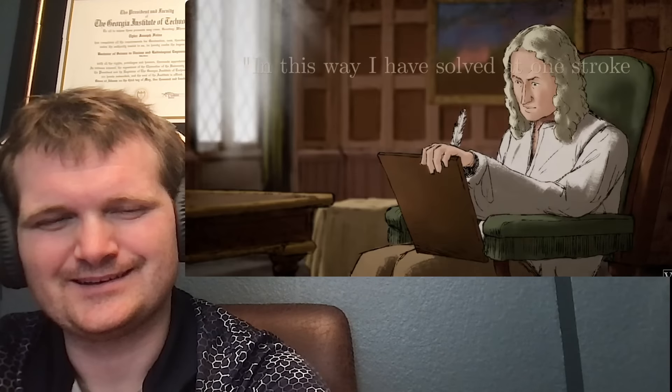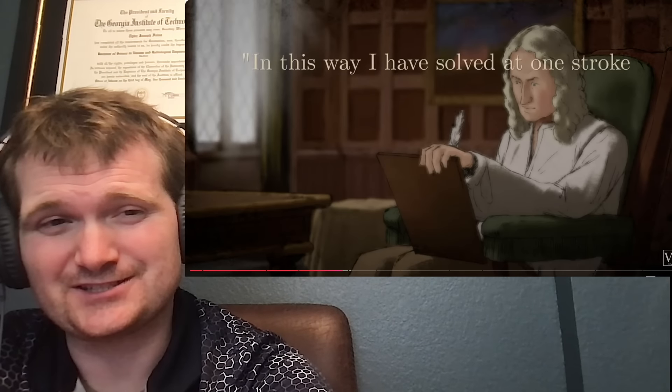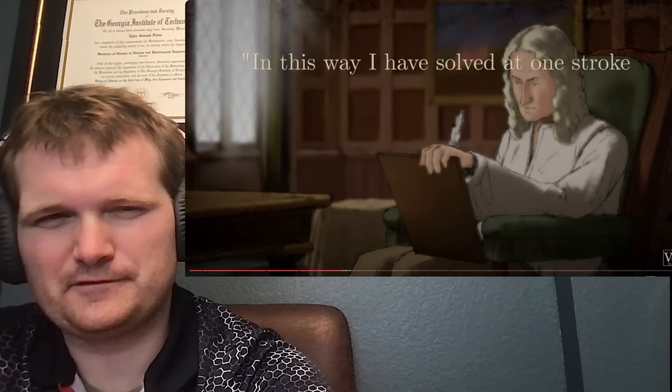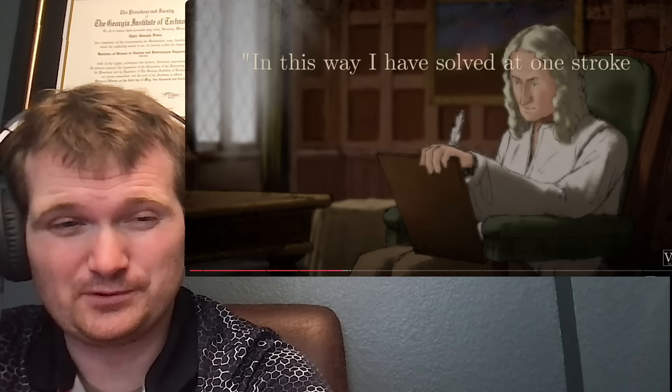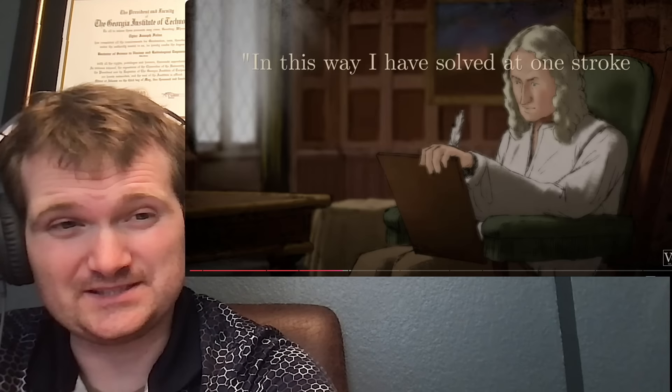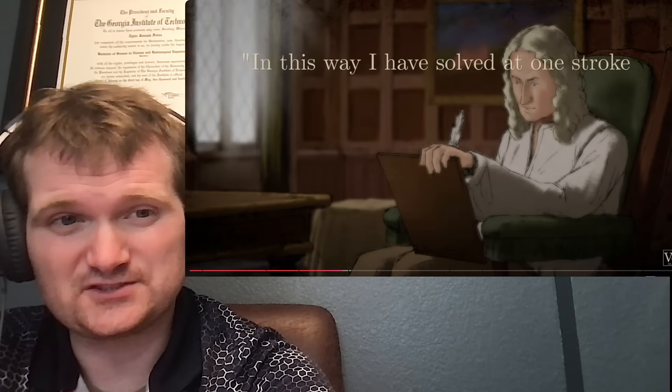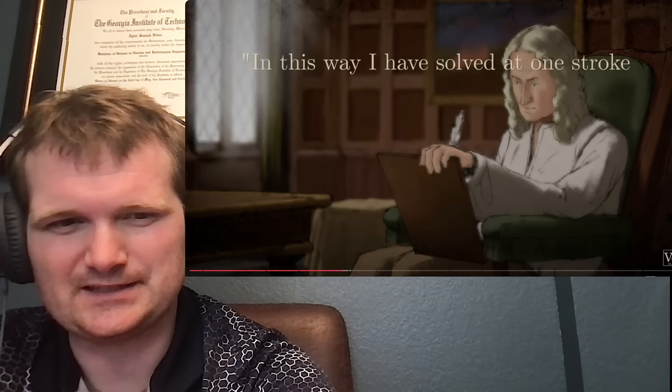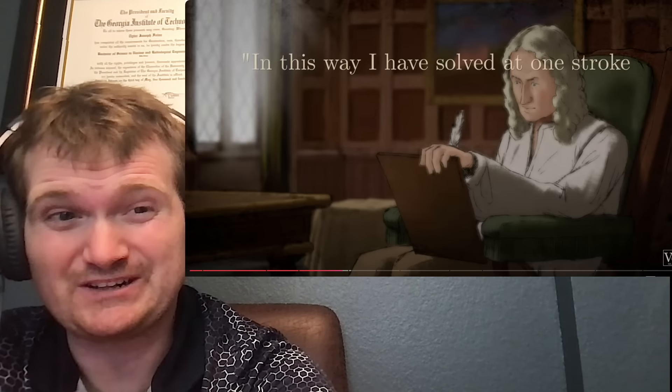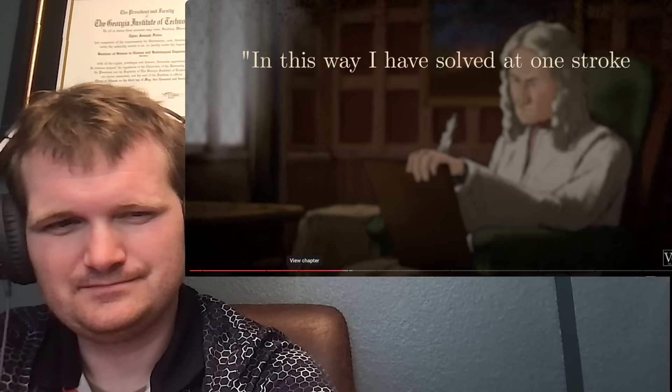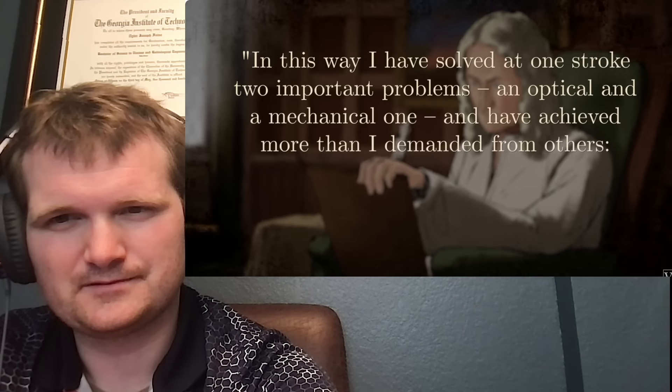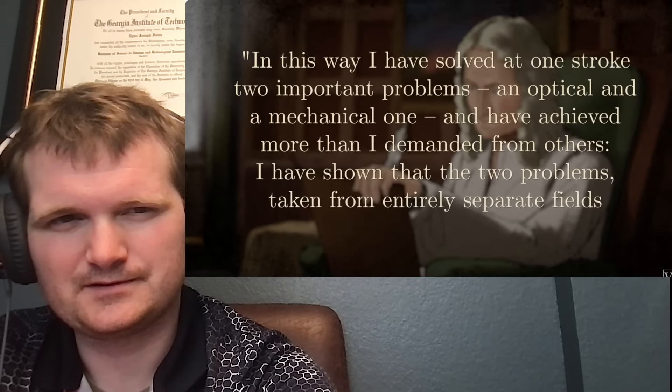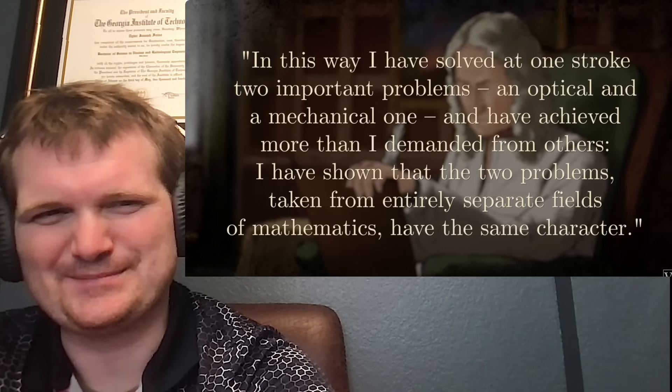For this reason, it's also known as the tautochrone curve, from the Greek for same time. That's cool. Upon finding this solution, Bernoulli wrote, that kind of reminds me of if you were to tunnel through the earth, it would take something like 40 minutes, regardless of what points you go through, because of the different intensity, because of the different points of the earth where gravity is stronger or weaker. That's an approximation. I mean, the earth's not like a perfect sphere or anything, so it probably varies a little bit, but you'd get pretty close. That's fascinating. In this way, I have solved at one stroke two important problems, an optical and a mechanical one, and have achieved more than I demanded from others.